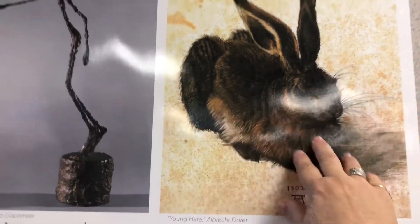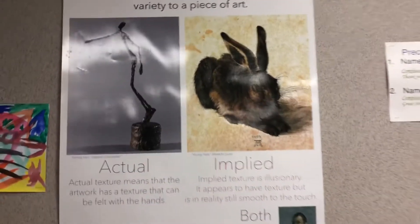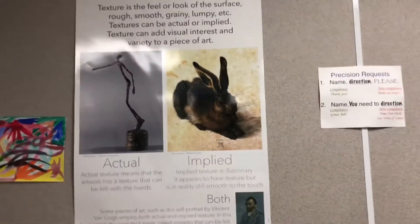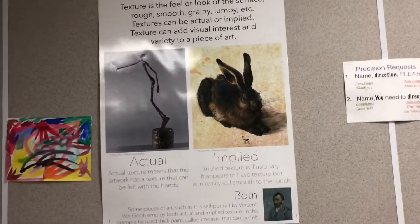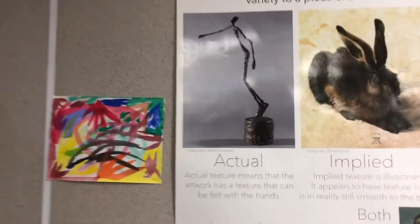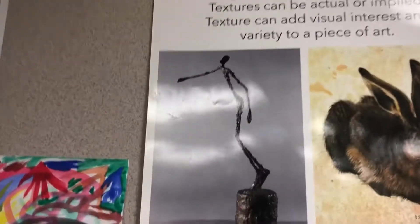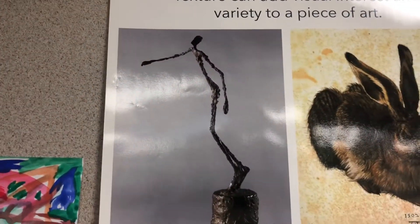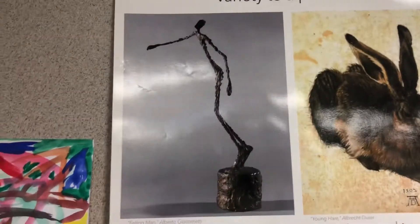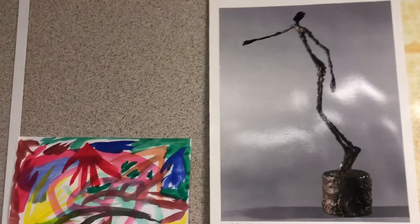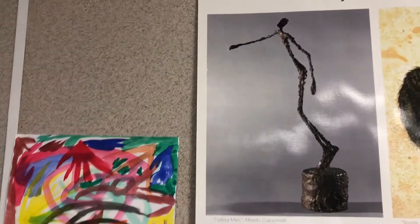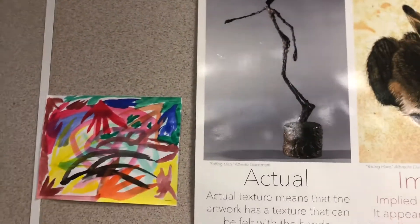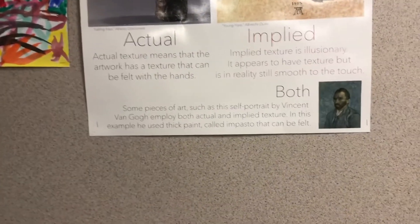But if we touch it, it's just a painting of a rabbit — it's just a picture on paper, so it's smooth. If we touched the real painting of the rabbit it would probably be smooth. But if this statue was real in our classroom and we touched it, yeah, it would probably feel really bumpy and scratchy. So some works of art have both.